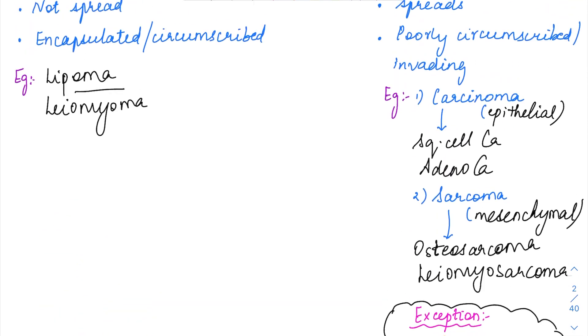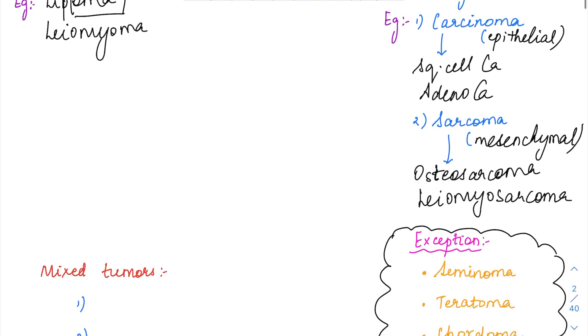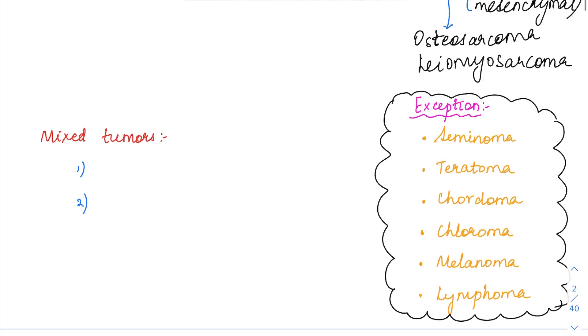Generally, we use the term OMA for any benign tumors and then we use the term carcinoma or sarcoma for malignant tumors, but there are exceptions to this.